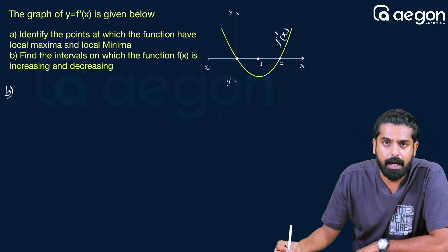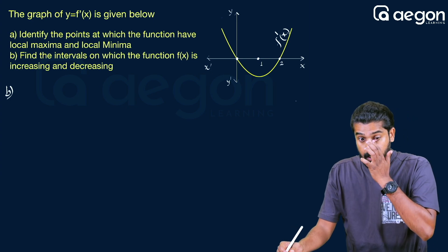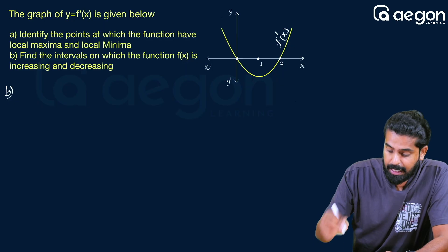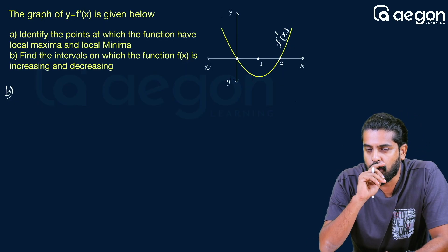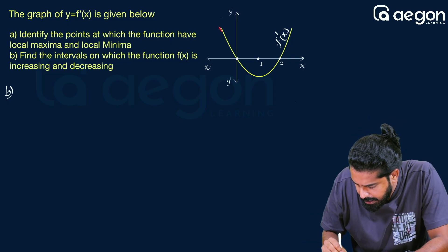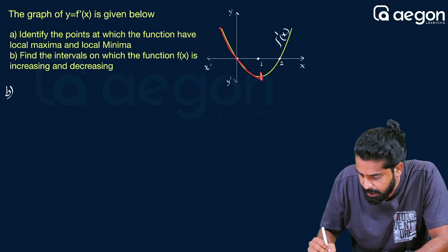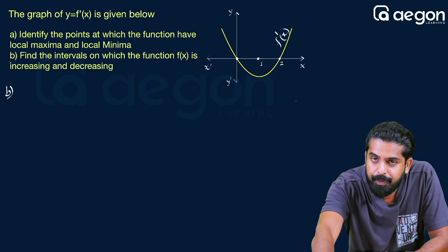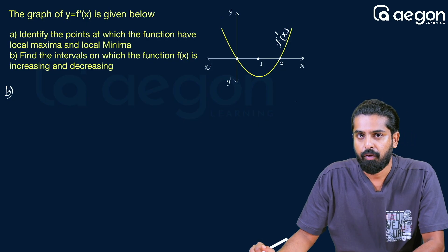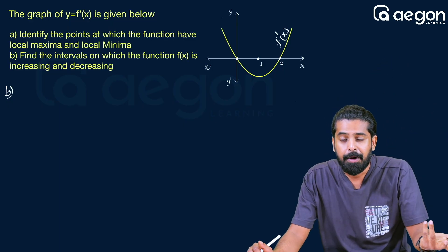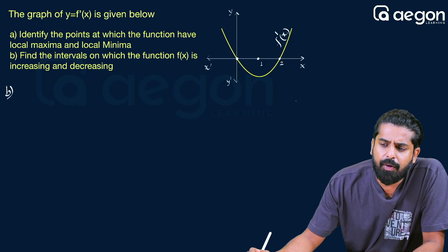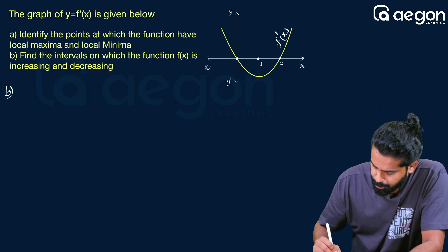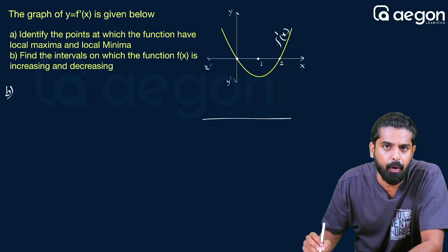This is a derivative graph, not a function graph. The key rule is: when the derivative is positive, the function is increasing; when the derivative is negative, the function is decreasing. We look at where the derivative graph is above the x-axis (positive) or below (negative). The y-axis value of this graph tells us whether the derivative is positive or negative at each x point.